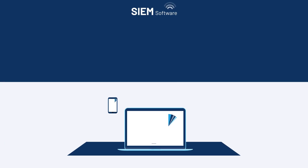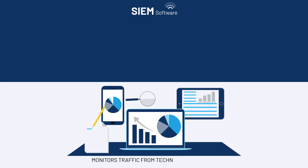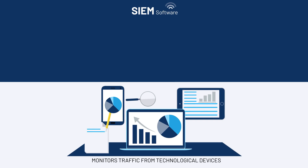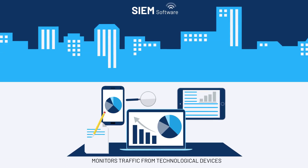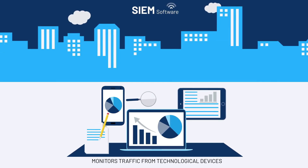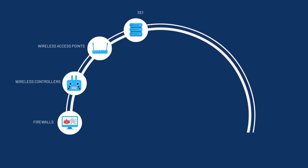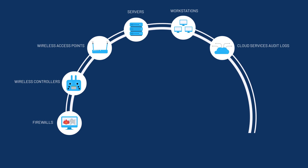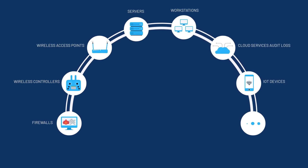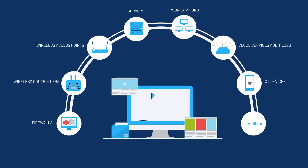SIEM software monitors traffic from technological devices commonly used in business environments, such as firewalls, wireless controllers, wireless access points, servers, workstations, cloud services audit logs, IoT devices, and so on.